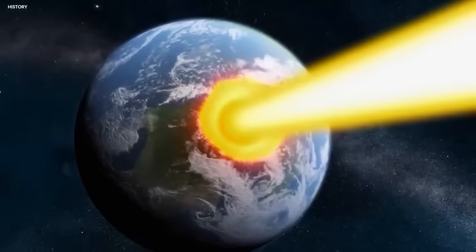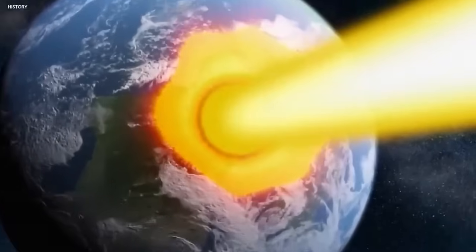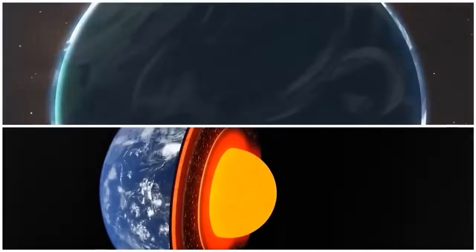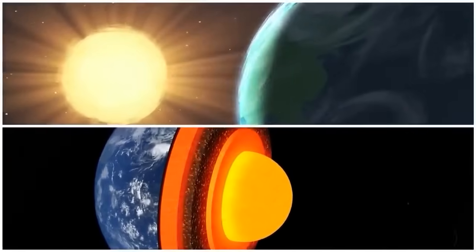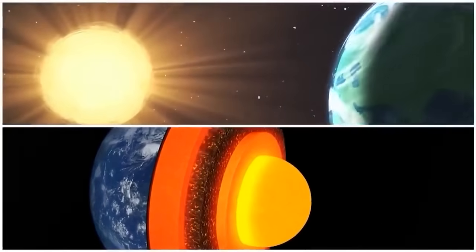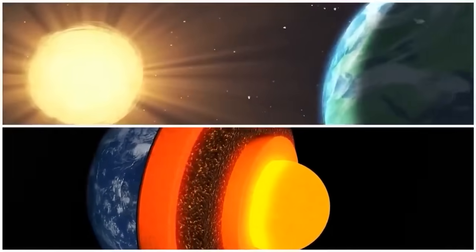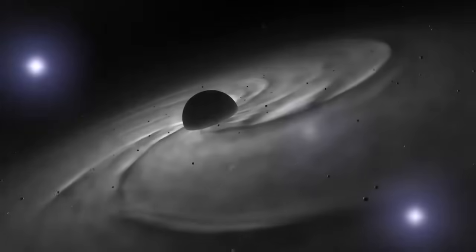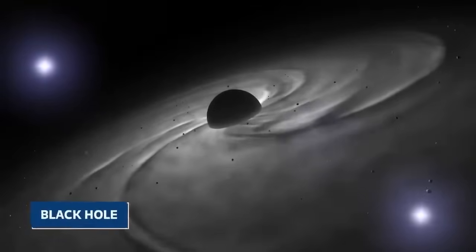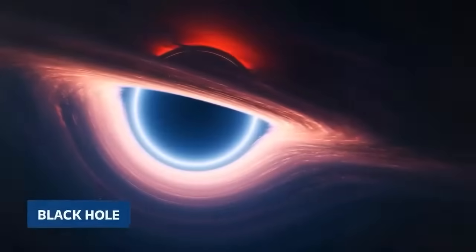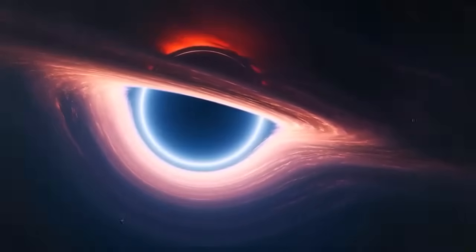Finally, what becomes of a star once it has dazzled the universe with its explosive finale? It embarks on a new journey, and what this journey looks like depends largely on the star's mass. If the core is sufficiently massive, Betelgeuse could collapse under its own gravity, giving rise to a black hole. This entity would exert such a tremendous gravitational pull that not even light could escape its grasp.